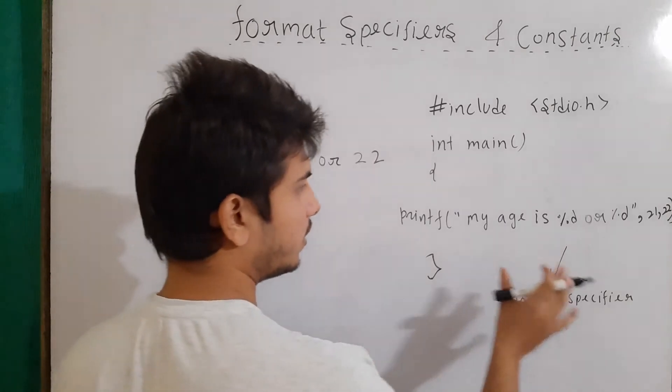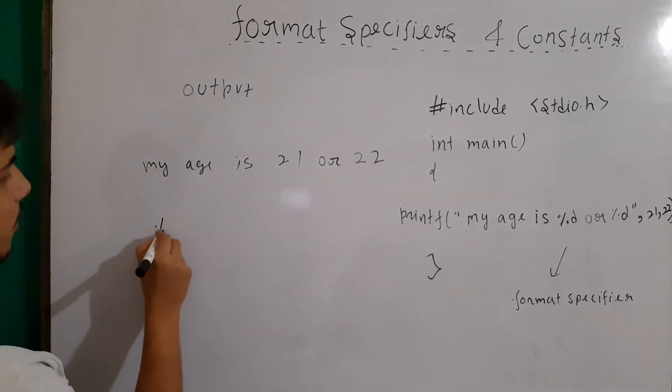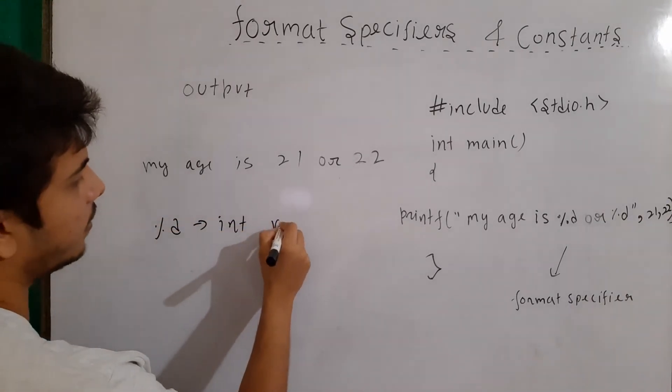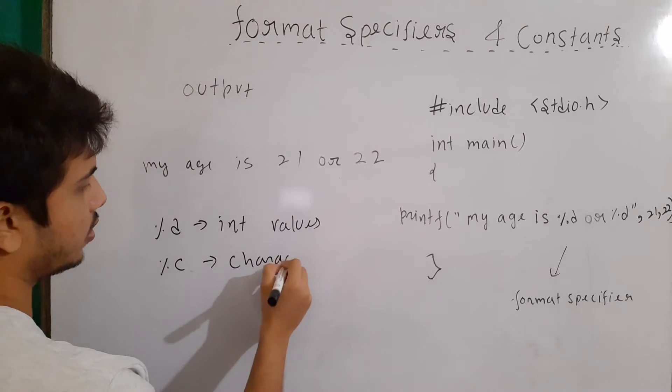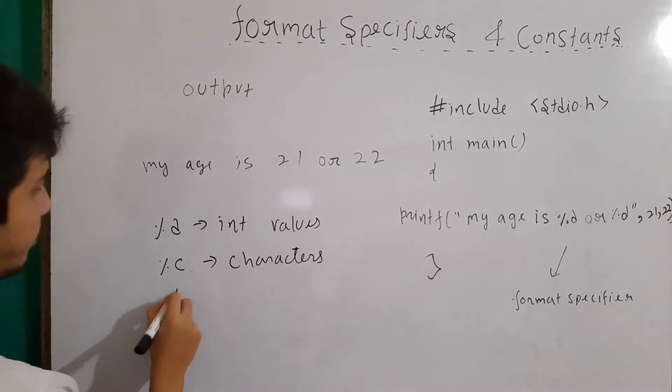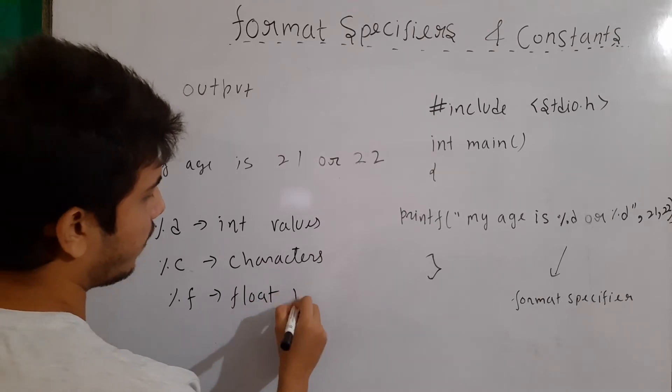For the basics, we will only talk about the three format specifiers that are generally used. The first one is the %d which will be used for integer values. The other is %c for characters. And then %f for floating values, float values.